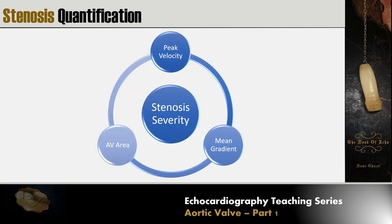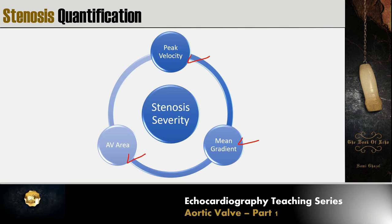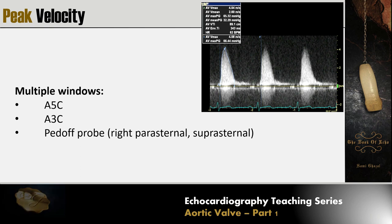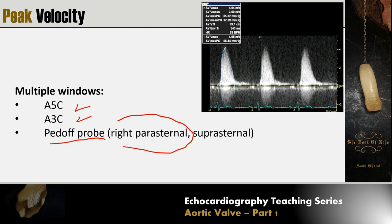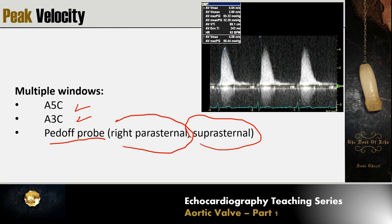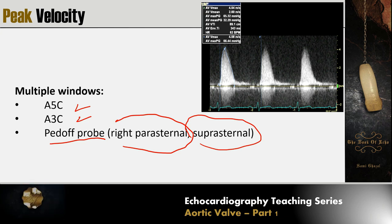For stenosis quantification, we need three parameters: peak velocity, mean gradient, and aortic valve area. For peak velocity and mean gradient, we must use multiple windows — apical 5-chamber, apical 3-chamber, right parasternal, and suprasternal — and take the highest velocity-yielding window. With irregular rhythm such as atrial fibrillation, use the window giving the highest velocity and average 5 to 8 consecutive beats.